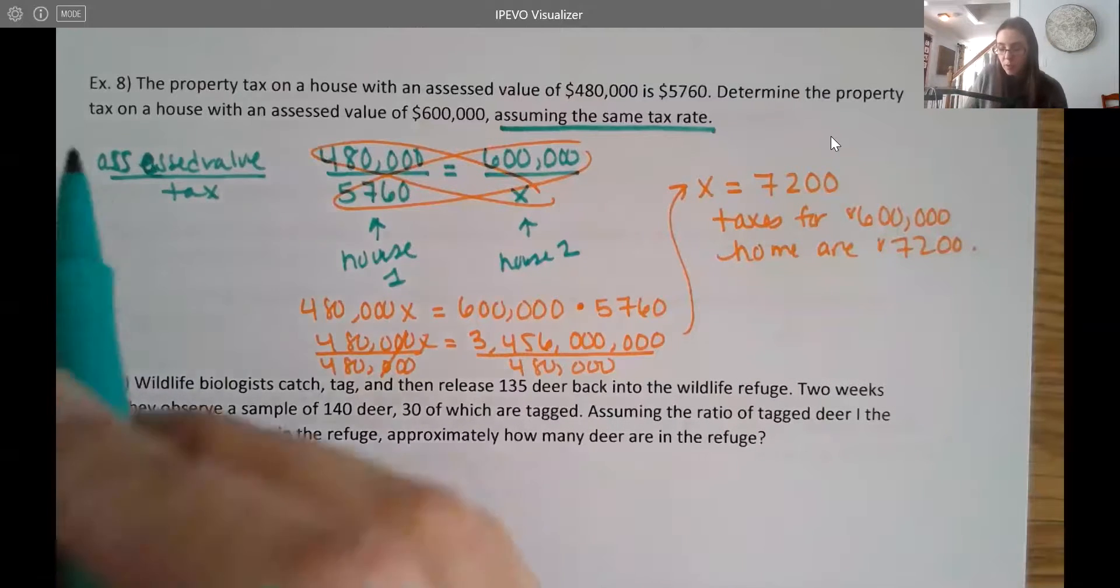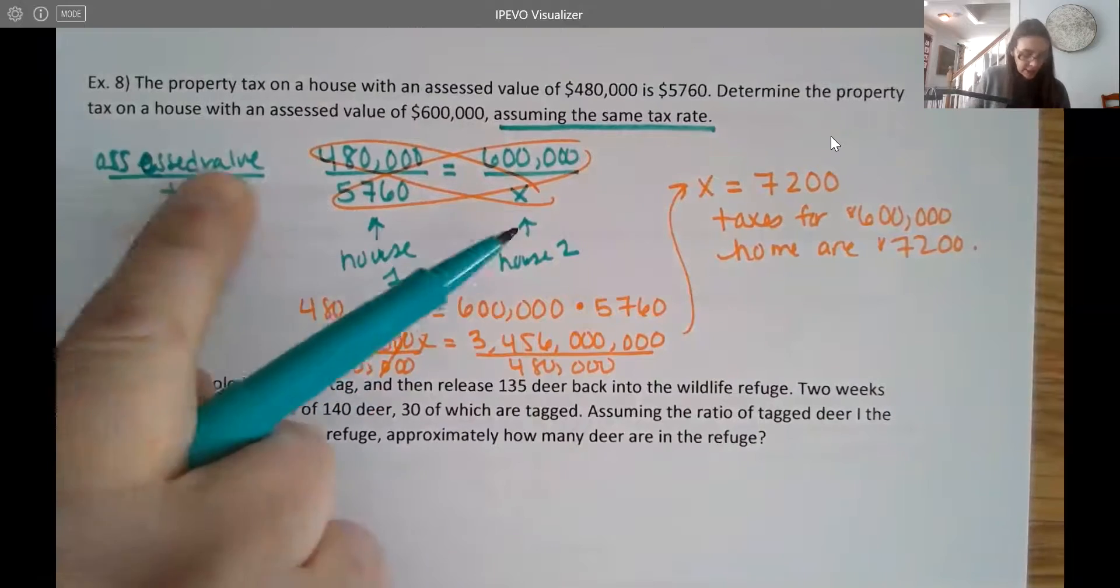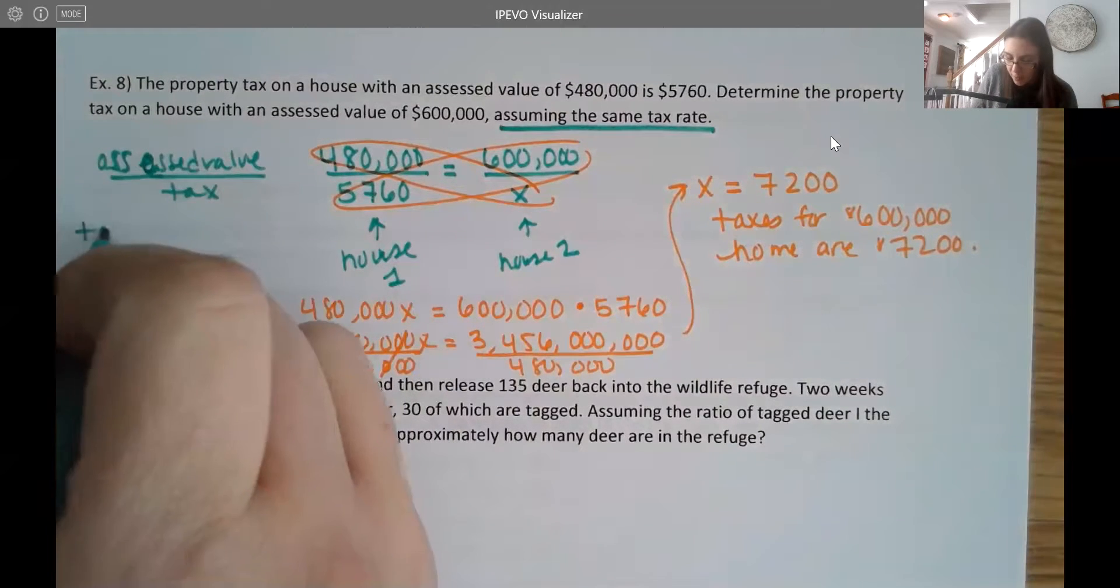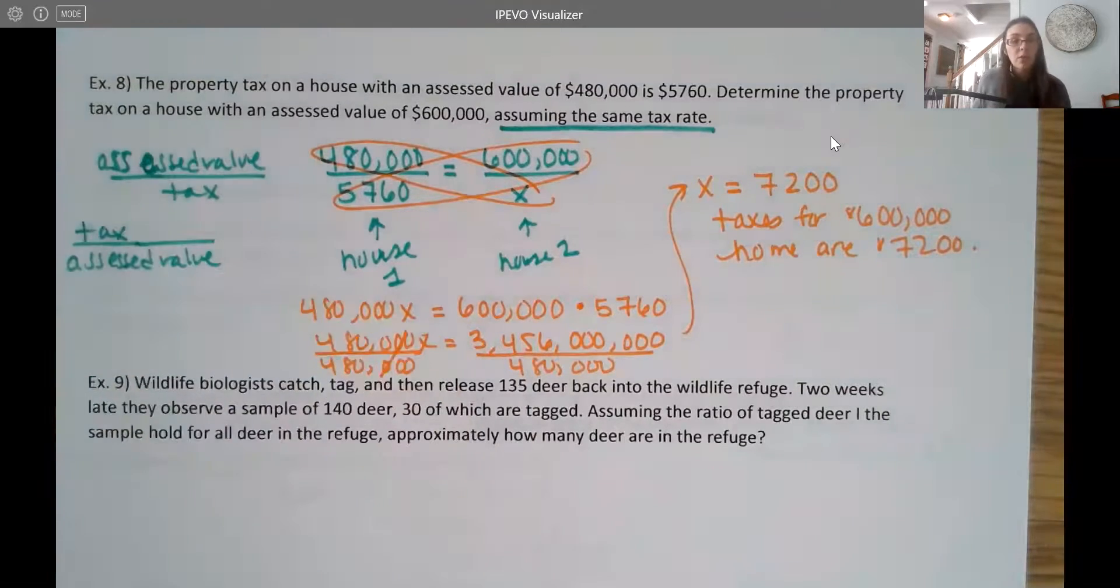Now, like I mentioned, this is one way you could set it up. There are other ways too. So the way your book does it, they use a very similar idea, but they put the tax on top and then the assessed value on bottom, which is fine.